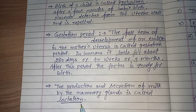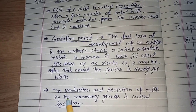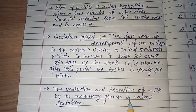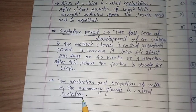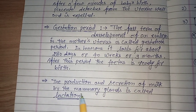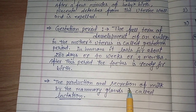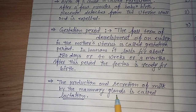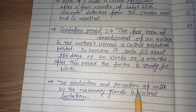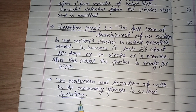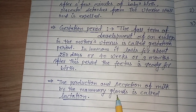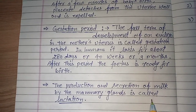Lactation: the production and secretion of milk by the mammary gland is called lactation. Lactation کا مطلب دودھ نکلنا یا دودھ کا اتپادن ہے۔ Mammary gland سے دودھ کا بننا اور نکلنا اس پرکریہ کو lactation کہتے ہیں۔ Milk کا secretion بہت ہی ضروری ہے baby کو feed کرانے کے لیے۔